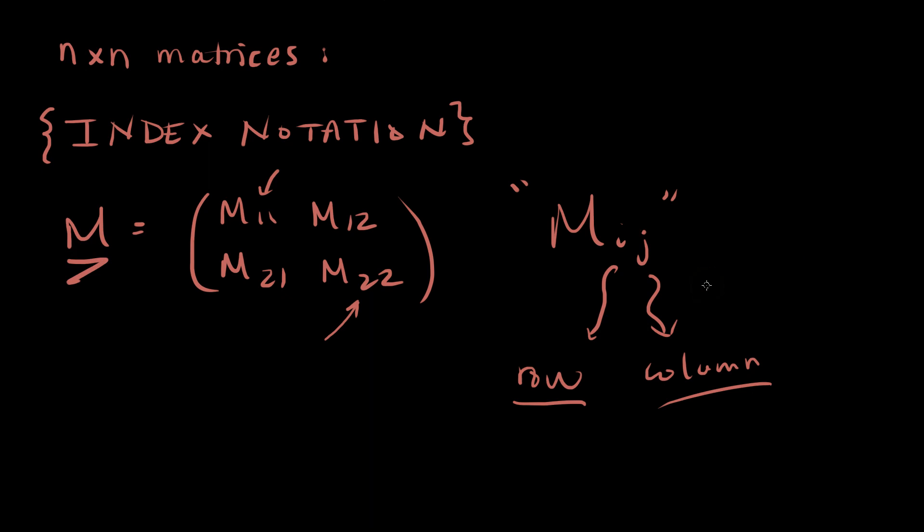So for example, M11 denotes the first row and the first column. That's why it's right there. M22 denotes the second row and second column. That's why it's on the bottom right corner. So this is what I mean by index notation, where we write the matrix not as M, but as M, I, J. And M, I, J is completely different than M. I want this to be clear. M, I, J refers to an element of the matrix, the I-th row and the J-th column of the matrix, all right? So I just want that to be clear.